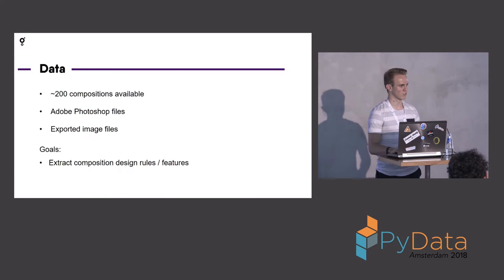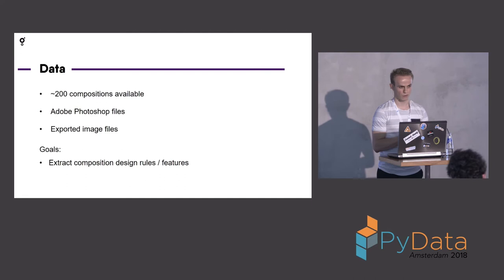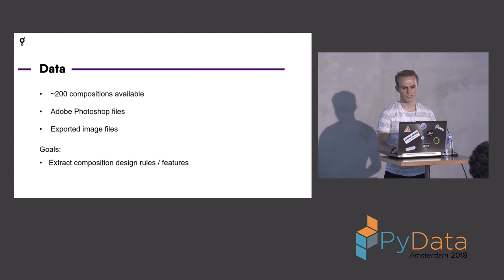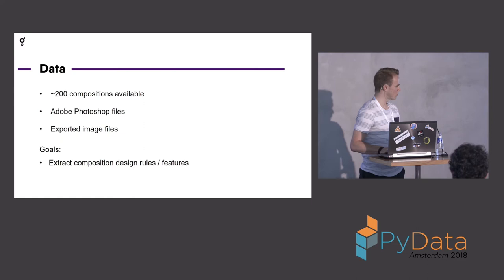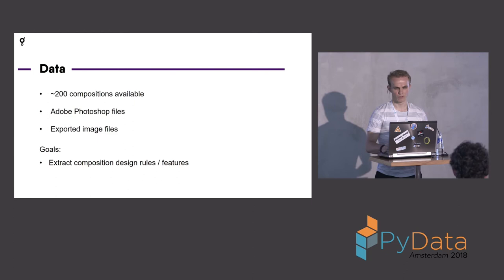There were 200 compositions available in the dataset. Those were Adobe Photoshop files, but also the exported image files — the .jpg files. The goal of using data is then to extract some sort of composition design rules or features from the images to learn from.